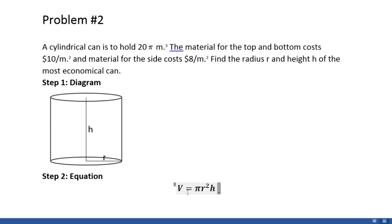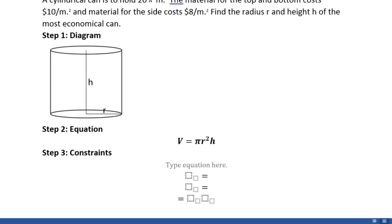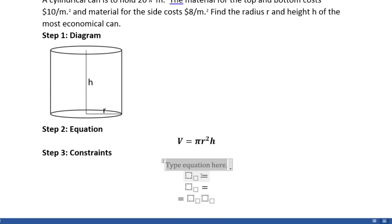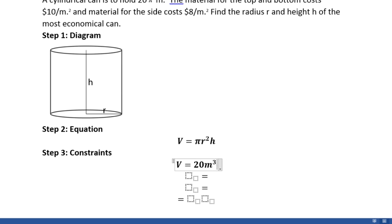Our third step, as in our first example, is to determine the constraints of the equation. In the question, we're told that the cylindrical can is to hold 20 cubic meters of volume. So this gives us our first constraint, which is that our volume must equal 20. We can leave off the units for now and put those back in later.